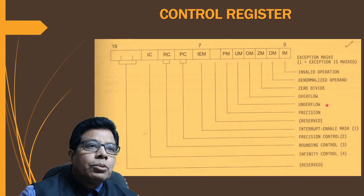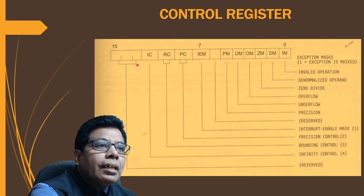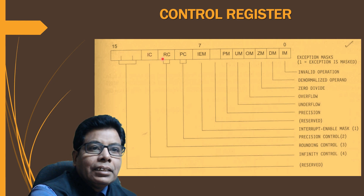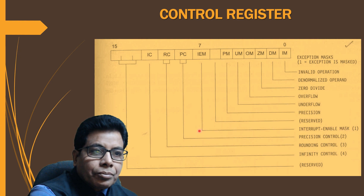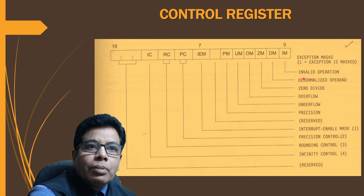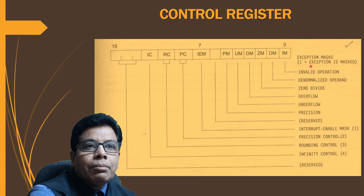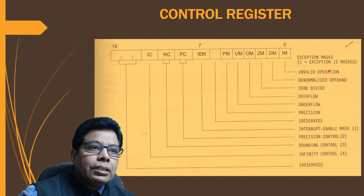The control register is a 16-bit register. It contains the IC (infinity control) field, RC (rounding control), PC (precision control), and IEM (interrupt enable mask), which is the mask bit for all interrupts. Bits d0 to d5 correspond to the exceptions: precision, underflow, overflow, zero divide, denormalize, and invalid operation. If a bit is 1, the corresponding exception is masked; if 0, it will occur.